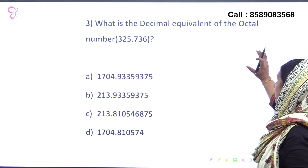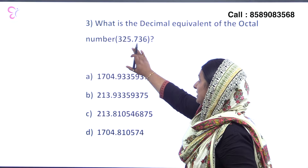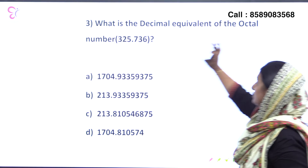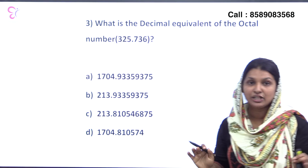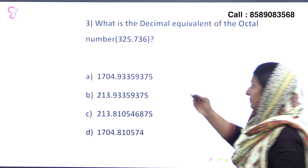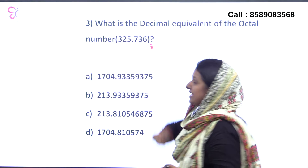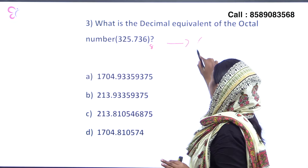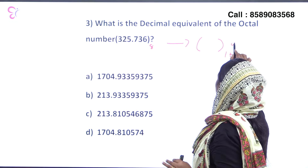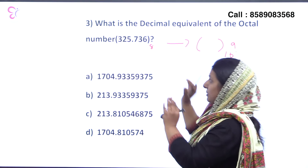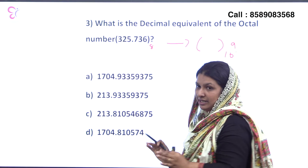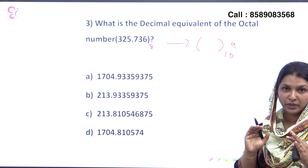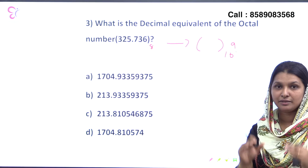Third question: what is the decimal equivalent of the octal number 325.736? The base of the octal number system is 8. To convert an octal number to a decimal number, we use base positional values.